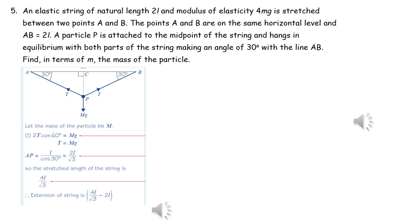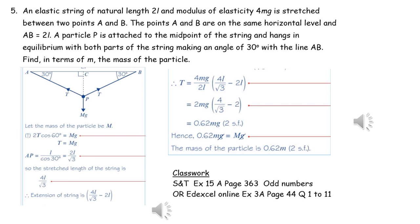We resolve vertically, giving the equation 2T cos60 = mg, and hence tension T = Mg. We then work out the distance from A to P, and doubling that gives the stretched length of the string. Subtracting the natural length gives the extension. Applying Hooke's Law, T = λx/L, where λ = 4mg, natural length = 2L, and extension = 4L/√3 − 2L. This gives T = 0.62mg, and since T also equals Mg, we find M = 0.62m.